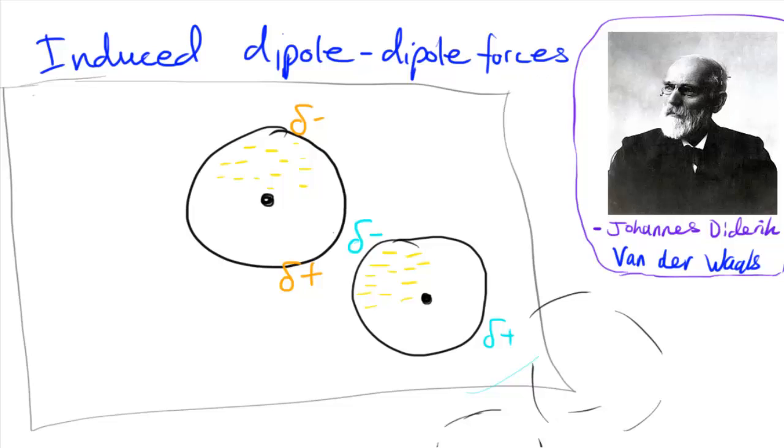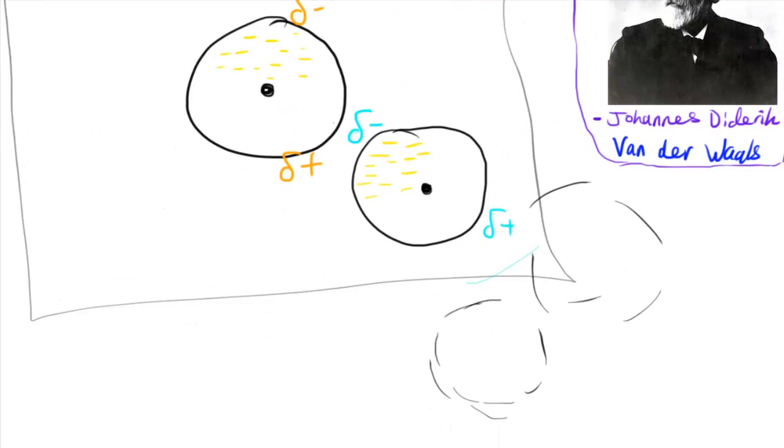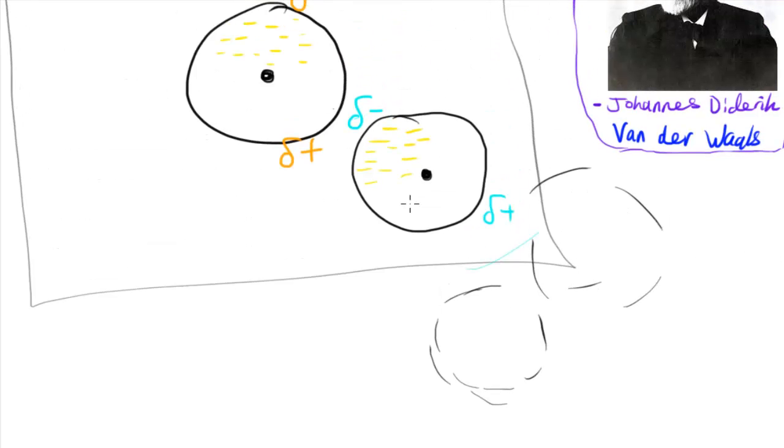In nature we observe van der Waals forces happening because this is the kind of force which acts between nearly all molecules. Sticky substances tend to work by the principle of van der Waals forces — they have quite high viscosity, don't flow easily, and tend to contain quite a lot of electrons, so these van der Waals forces arise quite regularly.